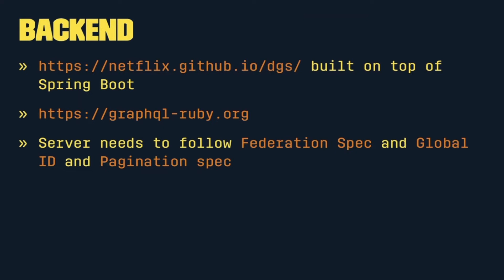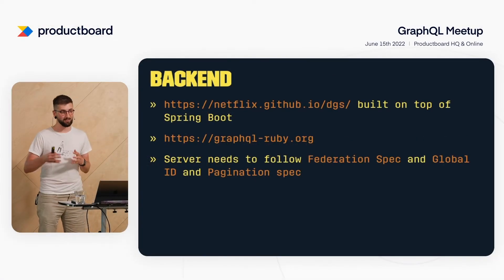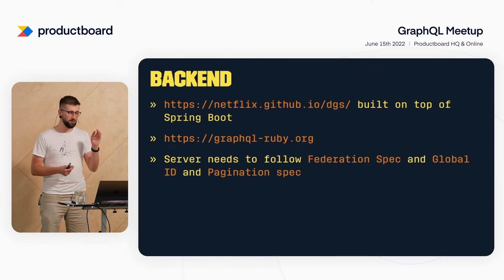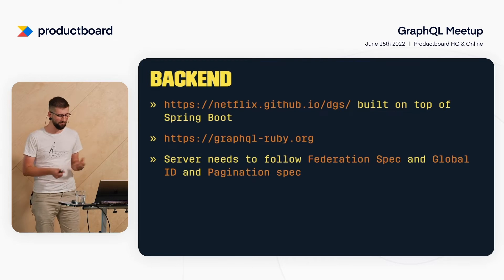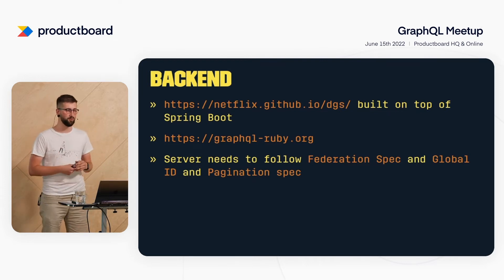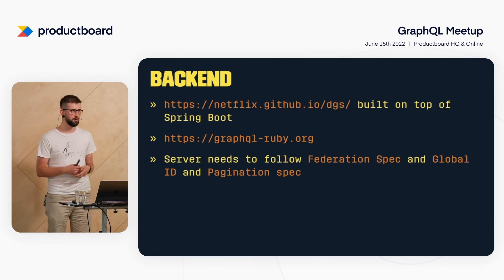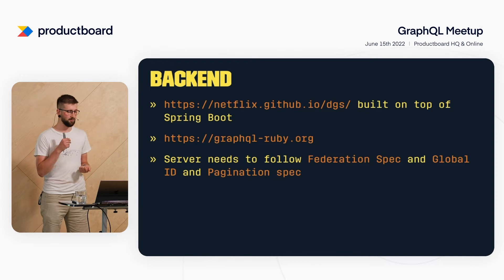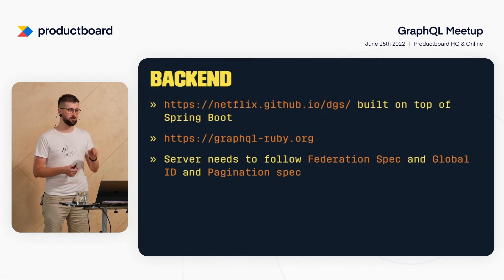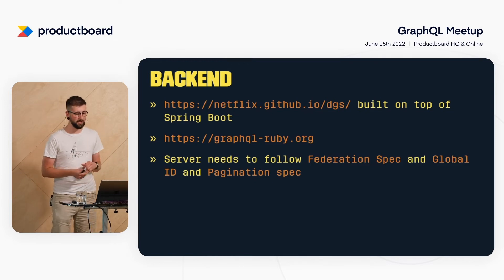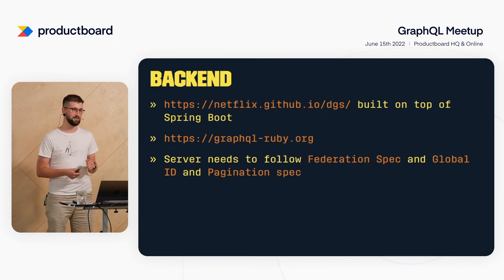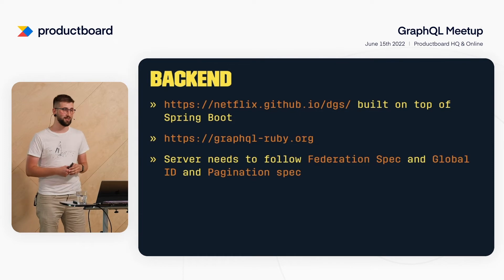The backend was a bit more straightforward. Since our strategy is to build new microservices in Kotlin using Spring Boot, we decided to pick Netflix DGS — we were super lucky because they had just released that back in Q3 of 2021. Regarding our monolithic server written in Ruby on Rails, we picked GraphQL Ruby, which is a pretty decent gem — battle-tested by a lot of companies like GitHub, Shopify, and Kickstarter.